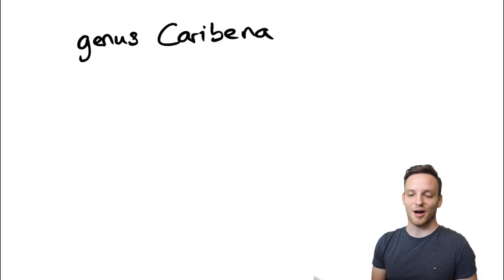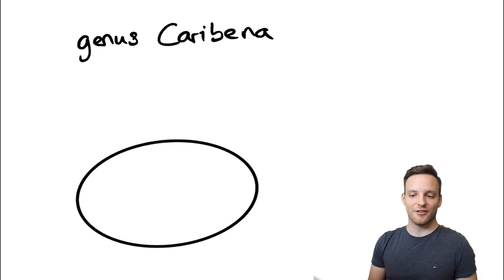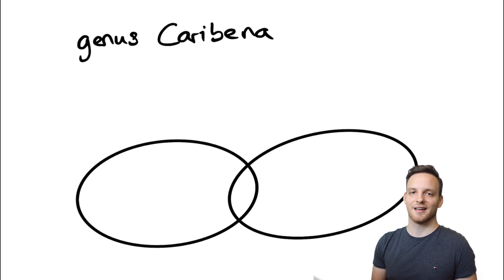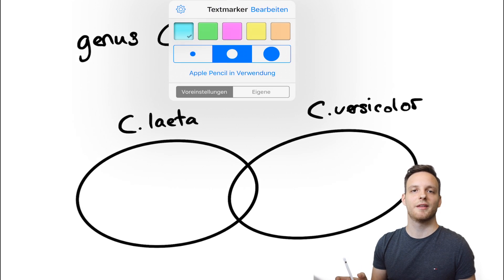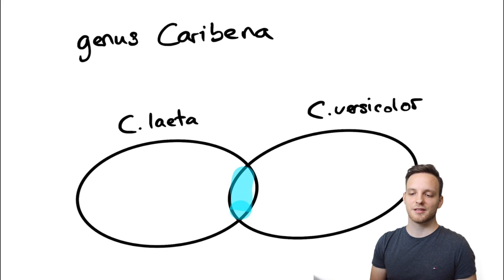Think about the newly established genus Caribena for our beloved Avicularia versicolor and Avicularia laeta. I'm drawing here a very easy, easy to understand illustration. On the left side we do have a circle which is called Caribena laeta and on the right side there is the circle called Caribena versicolor. These are the two species but they have an overlapping and this overlapping part is the defined morphological traits which defines the genus Caribena.